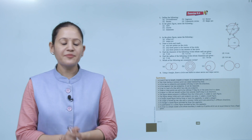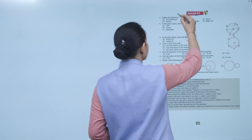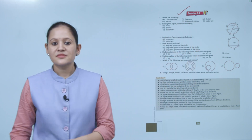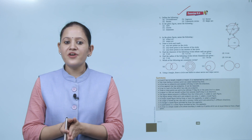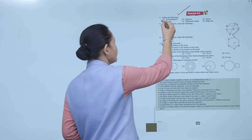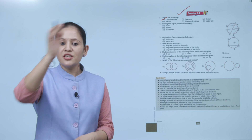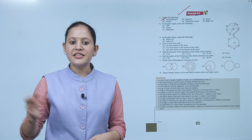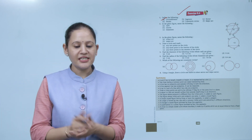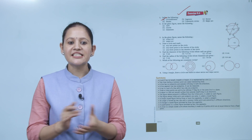Exercise 9.4: Define the following. First is circumference — the boundary of the circle is known as its circumference. Practice all the questions of this exercise.